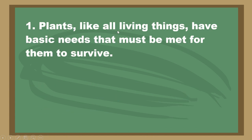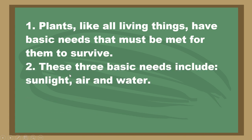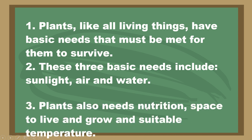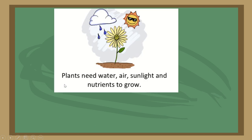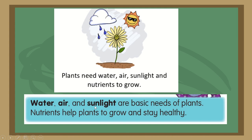A plant, like all living things, has basic needs that must be met for it to survive. These three basic needs include sunlight, air, and water. Plants also need nutrition, space to live and grow, and suitable temperature. Look at the picture — plants need water, sunlight, and nutrients to grow. Water, air, and sunlight are basic needs of a plant; nutrients help the plant to grow and stay healthy.